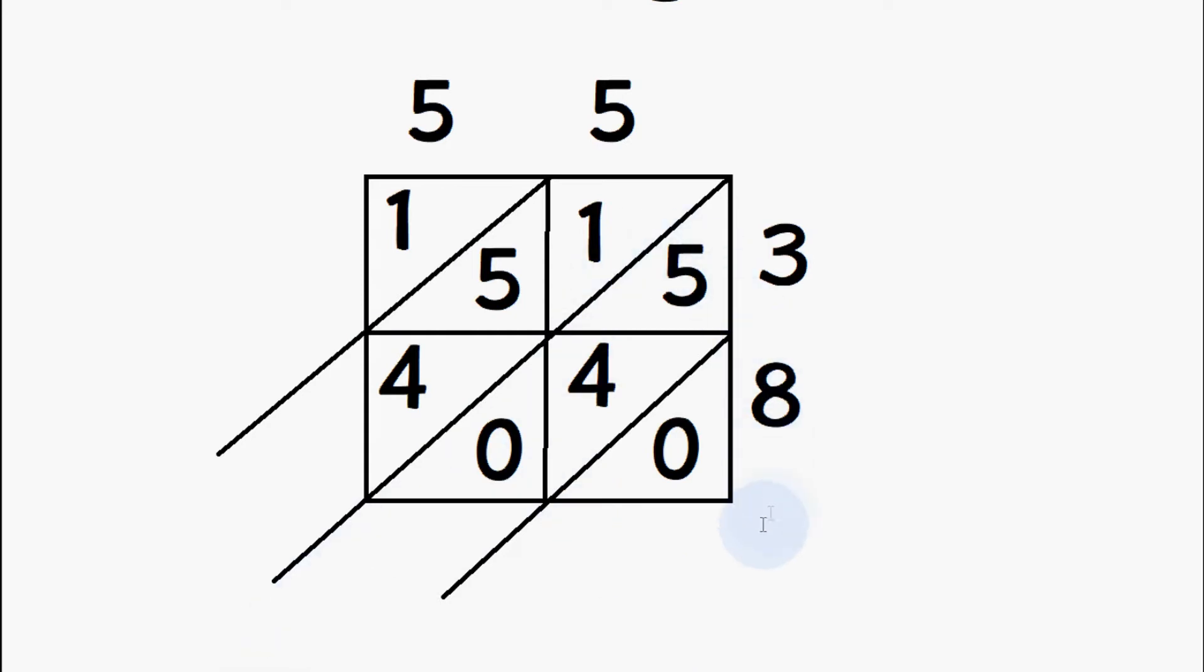Then we're going to add up all the numbers which are in these spaces which we made from the diagonal lines here outside the box. So on this side it's just 0 which is here, so let's write 0, then 5 plus 4 plus 0 is 9. 1 plus 5 plus 4 is 10, so we're going to add the 0 here and carry the 1 forward like we do with normal multiplication.